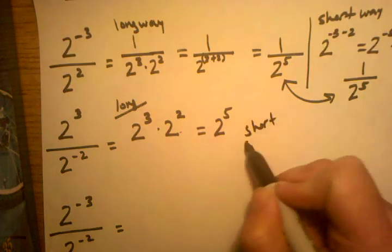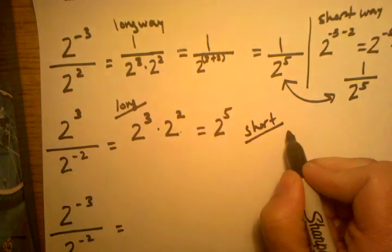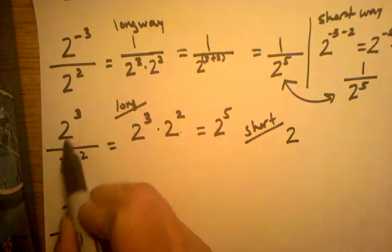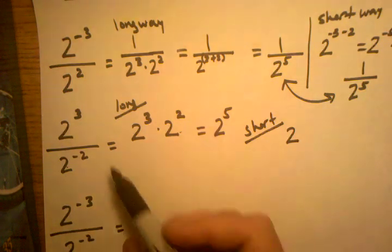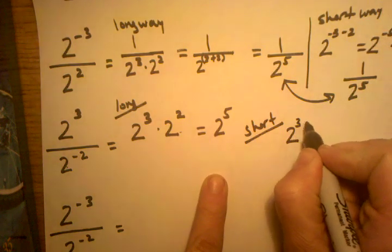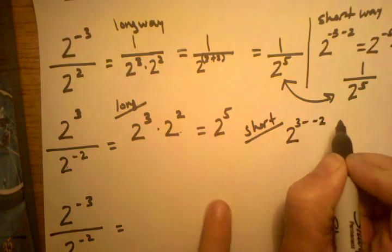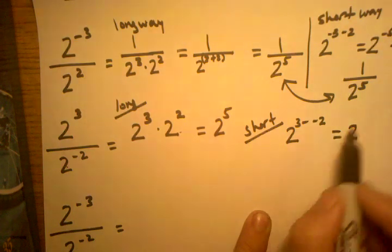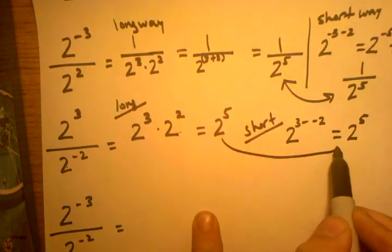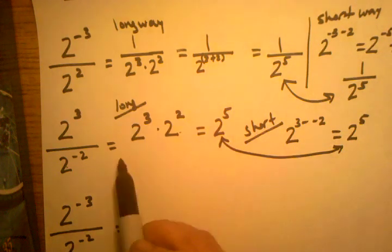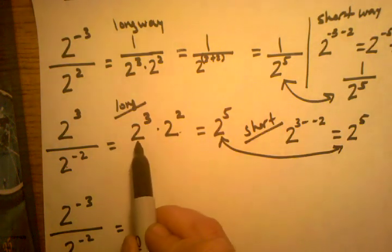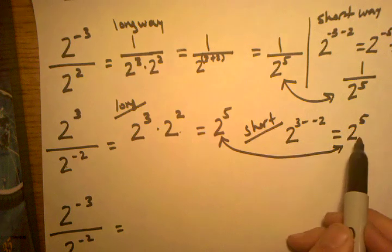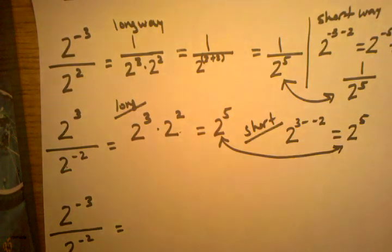The short way is simply taking the base, which is 2, and subtracting the exponents: 3 minus negative 2, which equals 2 to the fifth power. That's the same answer. Really, it doesn't matter how you do it, just as long as you do it in the way you're most comfortable with and the way that makes sense.